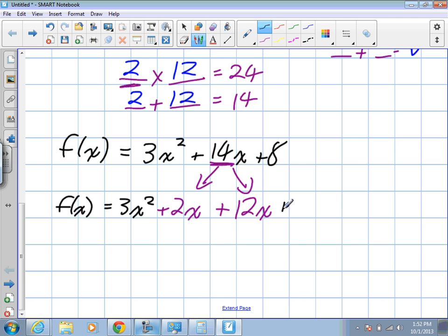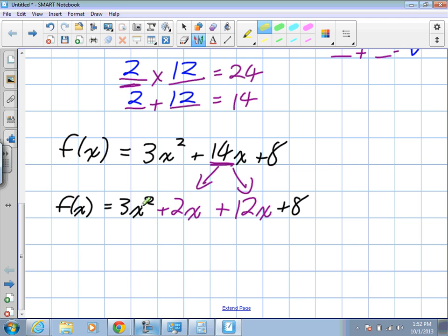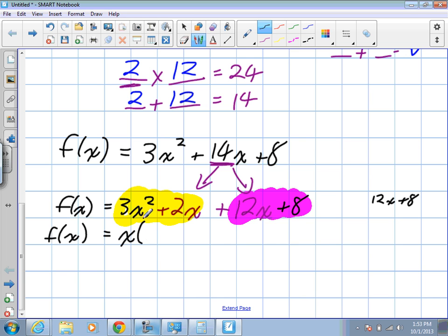The next thing we're going to do is we're going to common factor the first two numbers and common factor the second two numbers. On your notes it shows up fine. I know on this screen it's not looking good. Those are 12 and 8, okay? I'll write them on the side. So I need to common factor. What is the common factor of 3x squared and 2x? Just x, right? When I factor x out, what's left in the brackets? 3x plus 2. Great.